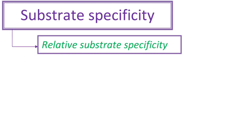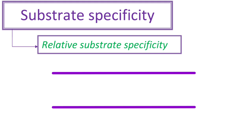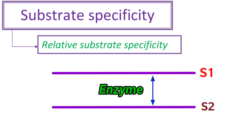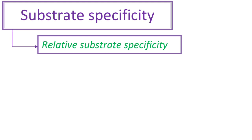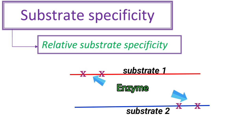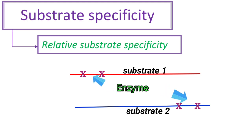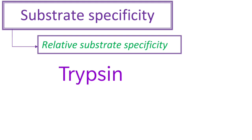The second type of substrate specificity is relative substrate specificity. In this case, an enzyme acts on more than one substrate. It is of two types: group specificity and bond specificity. Group specificity is when an enzyme acts on more than one substrate containing a specific group. For example, trypsin can hydrolyze the peptide bonds formed by carbonyl groups of arginine or lysine in any protein.